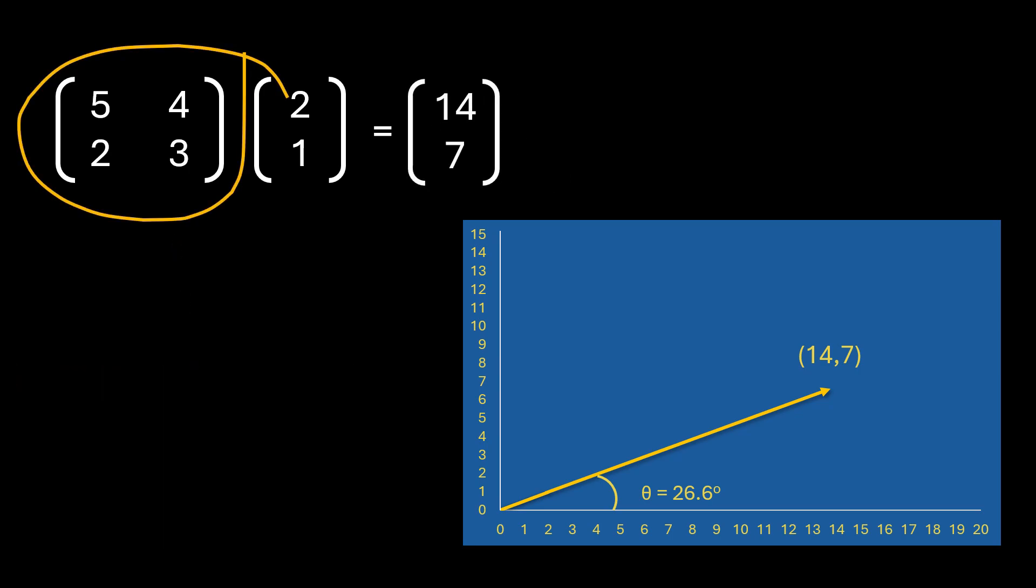So what happens if I change the linear transformation matrix and use this new matrix now? [6, 4; 2, 5]. Now the result will be [16, 9]. Now if I plot this it gives me this vector. You can see that the vector has increased in magnitude and it has also changed its direction. Its angle is now 29.4 degrees with x-axis. Its magnitude has also increased. So now this vector is not an eigenvector because it has both changed its magnitude and also changed its direction.